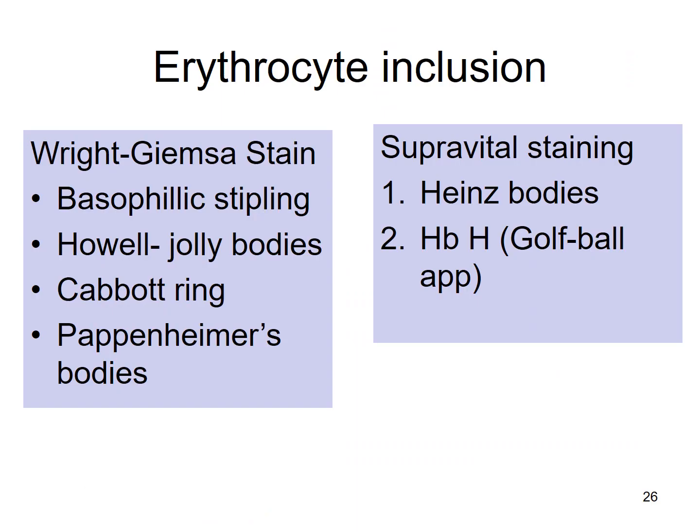There are some erythrocyte inclusions that we can see with routine Giemsa stain, such as basophilic stippling, Howell-Jolly bodies, Cabot rings, and Pappenheimer bodies. If we use supravital staining, we can see Heinz bodies and Hemoglobin H, which looks like a golf ball appearance.